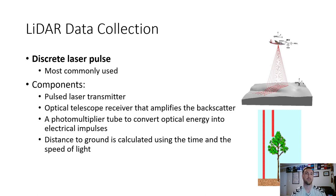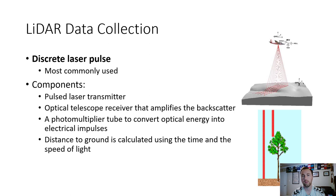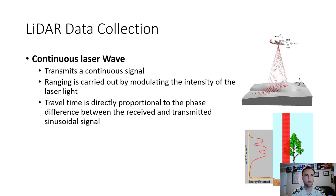There are two kinds of pulses. Discrete laser pulses are the most common — a single burst of light. Components include a pulsed laser transmitter, an optical telescope receiver that amplifies the backscatter, a photomultiplier tube to convert optical energy into electrical impulses, and distance to ground is calculated using time and the speed of light divided by two.